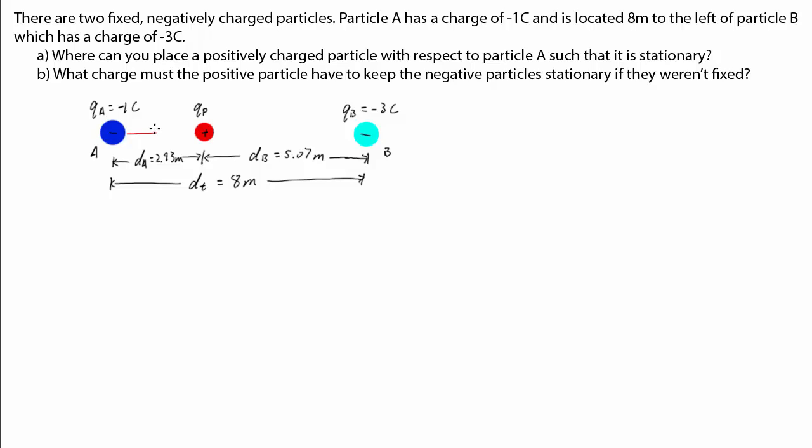There is a force pulling particle A towards the positive particle, and there is a force pushing particle A away from particle B. Now, for particle A to remain stationary, it must have a net force of 0 acting upon it. FB pushes A to the left, while FP pulls A to the right. So a net force of 0 is certainly possible.